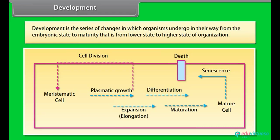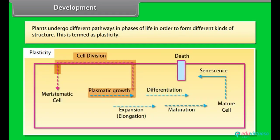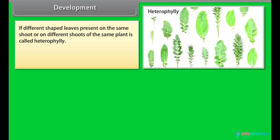Development. Development is the series of the changes in which organisms undergo in their way from the embryonic state to maturity, that is, from lower state to higher state of organization. Plants undergo different pathways and phases of life in order to form different kinds of structure. This is termed as plasticity. If different shaped leaves present on the same shoot or on different shoots of the same plant, it is called heterophylly.